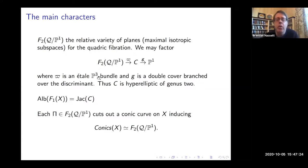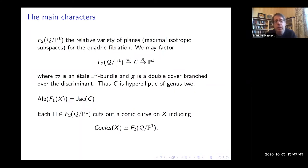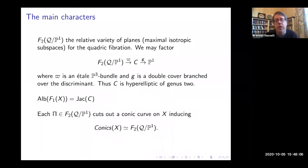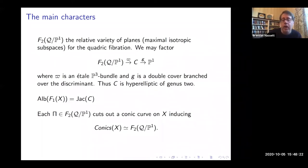This holds true whenever you have an odd-dimensional complete intersection of two quadrics. The Albanese of the variety of lines is isomorphic to the Jacobian. Geometrically, the variety of lines is isomorphic to a principally polarized abelian variety, but not necessarily over the ground field — it may or may not have points — though the Albanese is always isomorphic to the Jacobian of the curve. As you look at these maximal isotropic subspaces in the fibers, each one is isotropic for its corresponding quadric, but it traces out a conic curve on the complete intersection. So the conics of X are an étale P^3-bundle over the hyperelliptic curve of genus two.